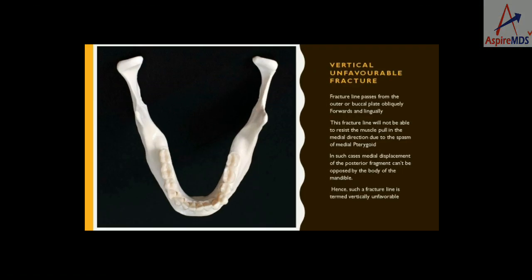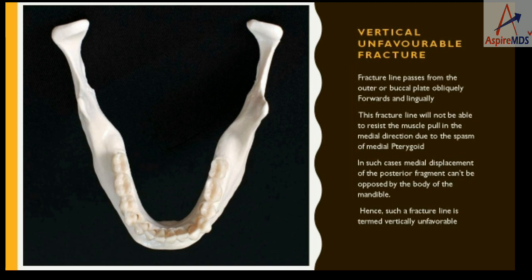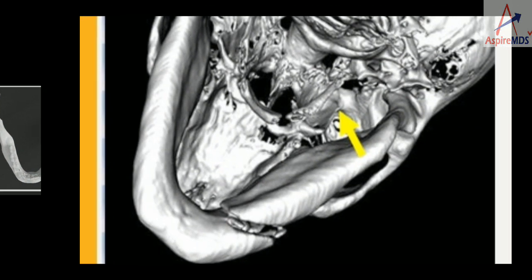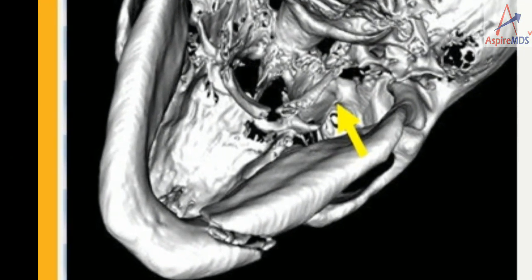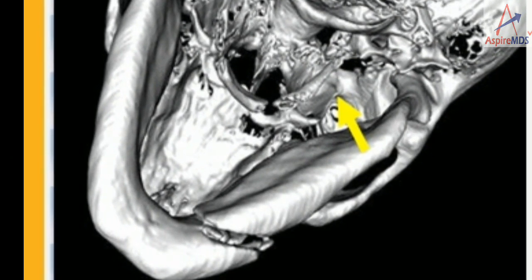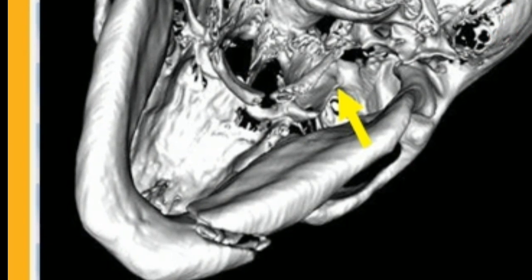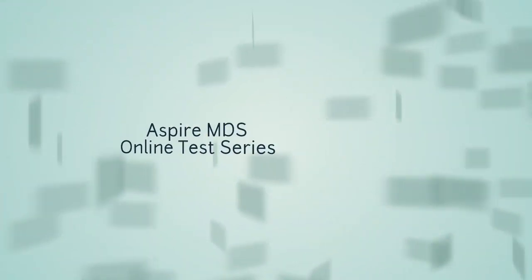In a vertically unfavorable fracture, as opposed to the favorable fracture, the fracture line passes anteriorly from the buccal to the lingual side, such that the proximal fragment can be easily displaced by the muscle pull. The same can be seen in this 3D CT view of the mandible. Thank you.